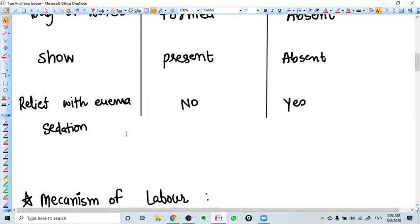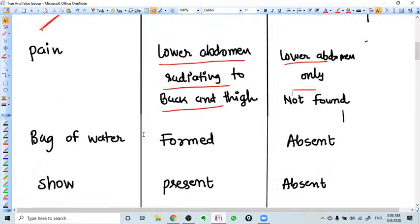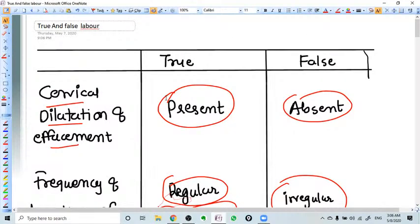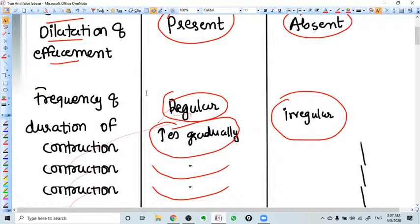You need to admit the patient. This makes a very clear cut difference between true labour and false labour.